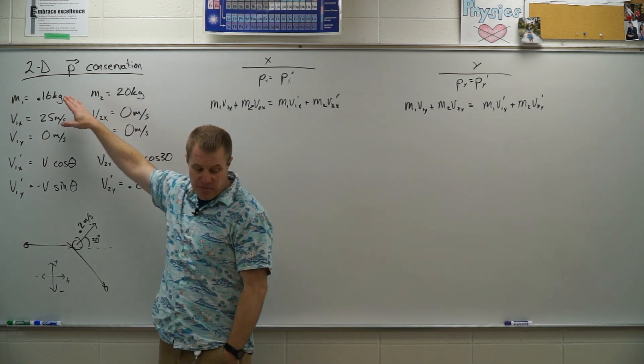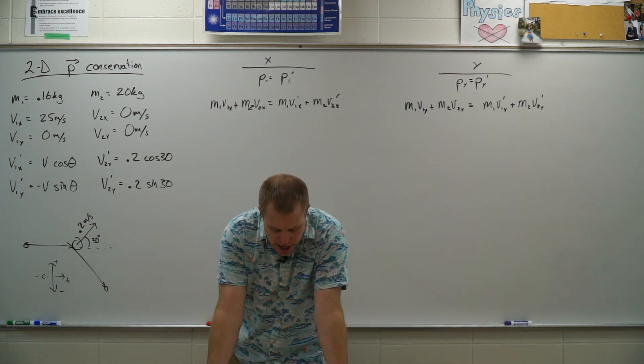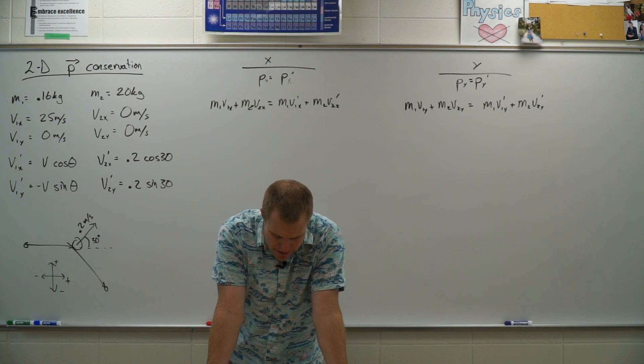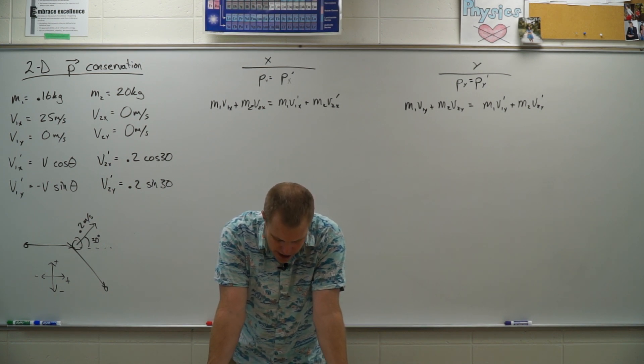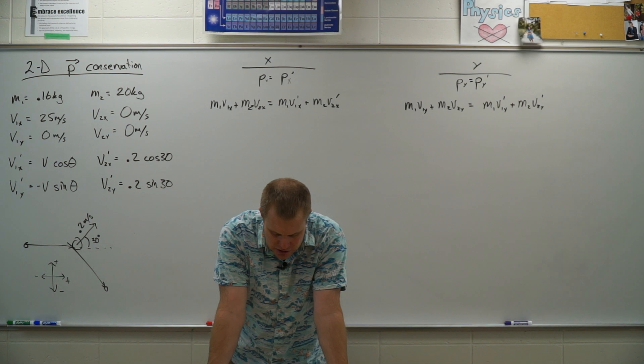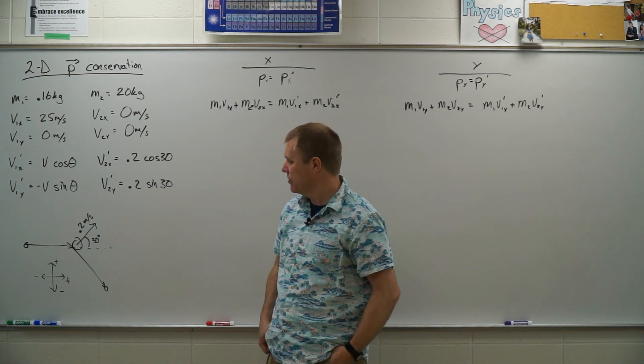So identifying our information. A 160 gram hockey puck traveling at 25 meters per second collides with a 20 kilogram curling stone at rest. After the collision, the stone is traveling at 0.2 meters per second at an angle of 30 degrees from the puck's original path. Find the velocity of the puck after the collision.